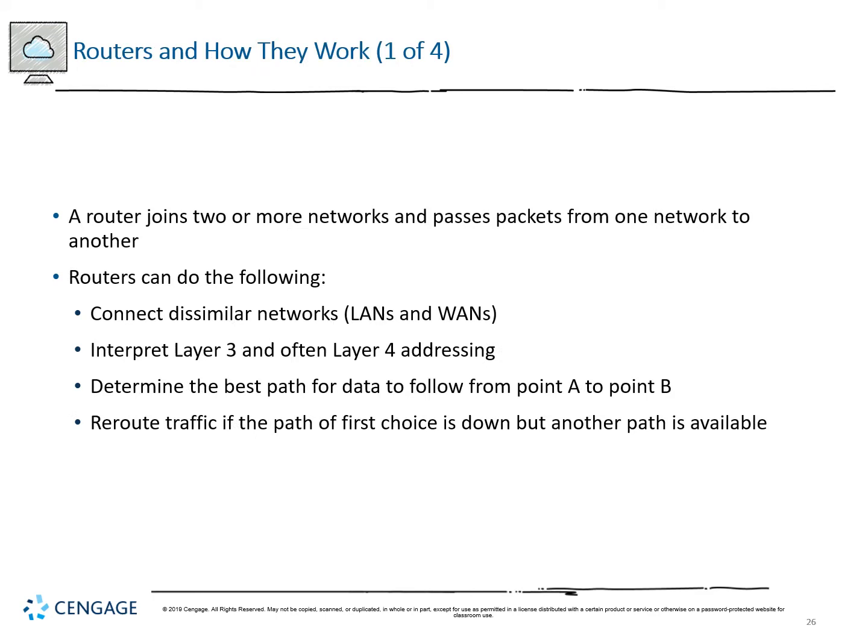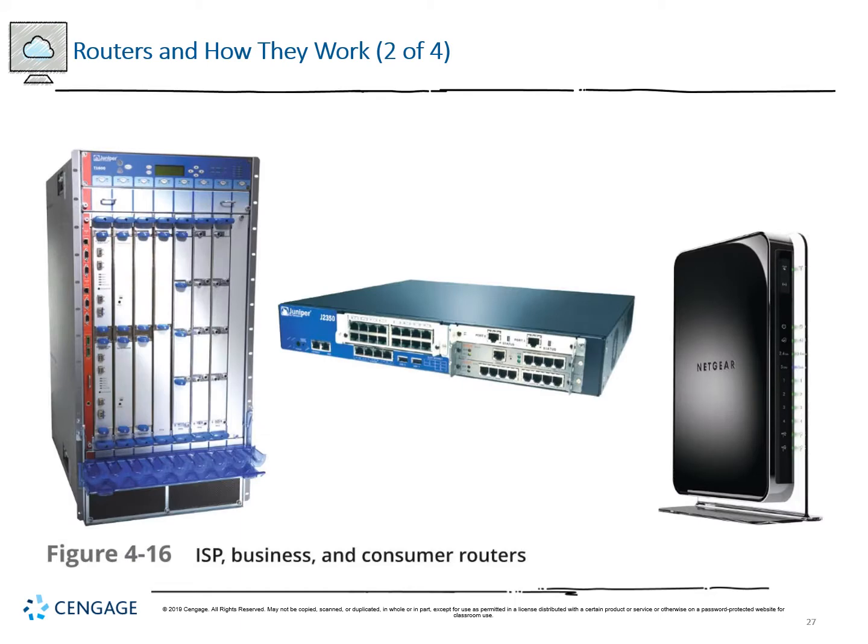Now that we have all these protocols laid out, let's figure out how a router works — how we join two networks together to pass things from one local network to another. Routers can interpret Layer 3 and often Layer 4 addressing, dealing with both IPs and ports. They find the best path for data and communicate between routers to route traffic efficiently. They can also reroute traffic if the primary path is down but another known path is available, requiring constant complex calculations at small intervals.